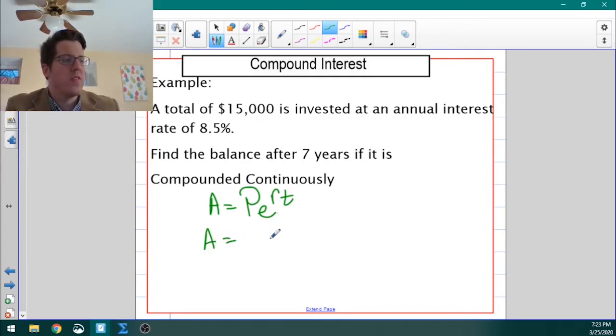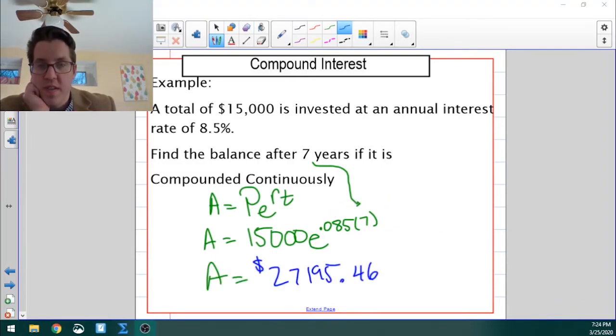So we're using the same numbers, but we're using E. When you write that out, write that out as E. Don't write it out as like 2.71. Just write it out as E to the 0.085 times 7. In this, we're probably thinking of the number of years as our variable. So this would still be exponential because the quantity of interest is in the exponent. So let's plug that in and see what happens. We get about $27,195.46. That was just a little bit, like $13 more than our monthly compounding, or weekly compounding rather.